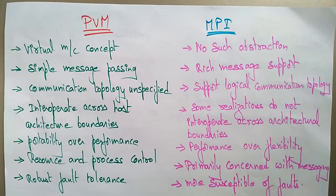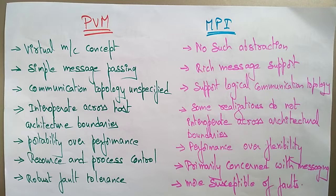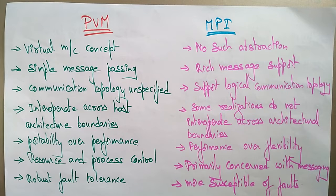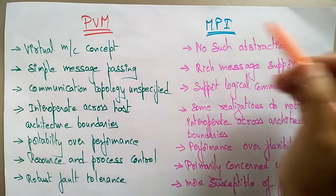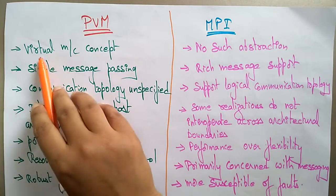Welcome back. In the previous video I explained about what exactly Parallel Virtual Machines are and what is the Message Passing Interface with examples. Now let me explain the main difference between PVM and MPI. In MPI, if any fault tolerance issue occurs — if any node fails — the complete network will be dropped. But in the case of PVM, whenever a node fails, only that failed host can be deleted or recovered from the fault.